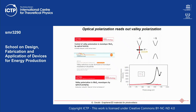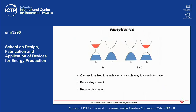This gives rise to a field called valleytronics. Just as typical electronics works with the charge of electrons, and spintronics uses spin as an additional degree of freedom, here you can use the valley as an additional way of storing information. In principle, you can address one or the other valley, which can be thought of as possible ways of writing one bit or the other — storing information in one valley or the other.